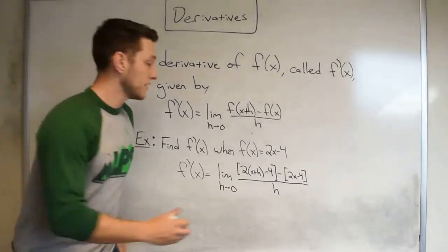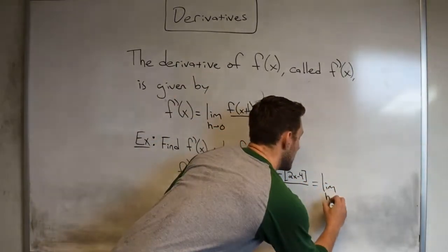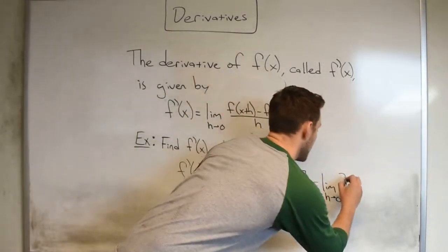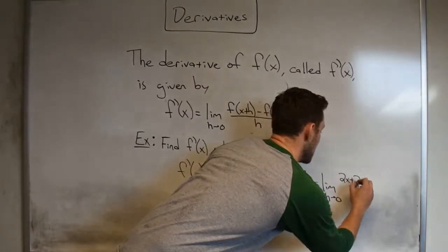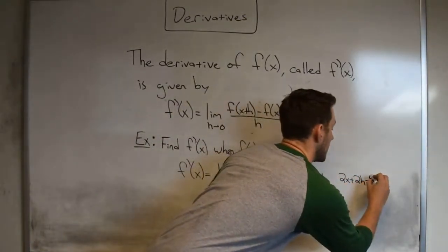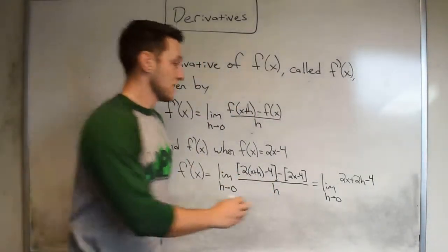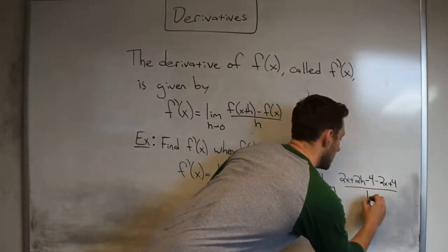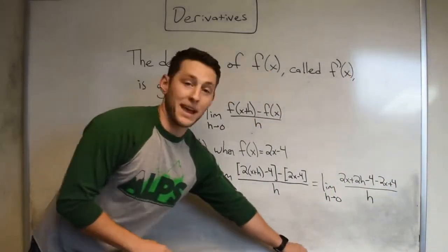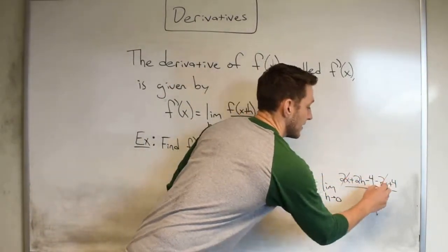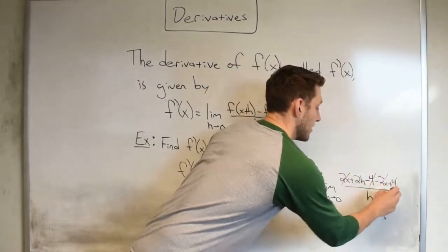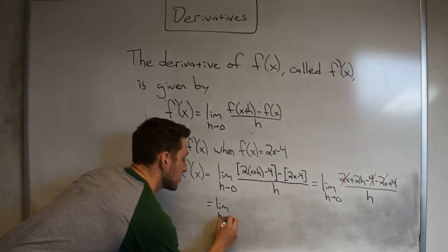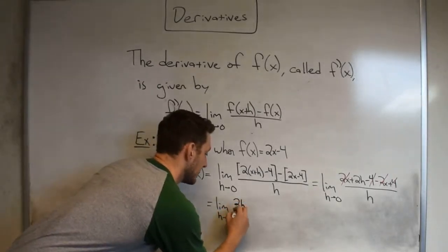Now, doing a little bit of algebra. This is just the limit as h approaches zero of, well the 2 distributes, 2x plus 2h minus 4. This minus right here distributes, minus 2x plus 4 all over h. We can now do some canceling, and notice the 2x, they both cancel, and then also the 4s.